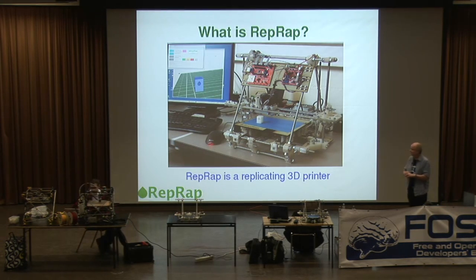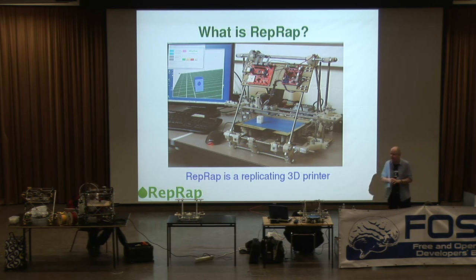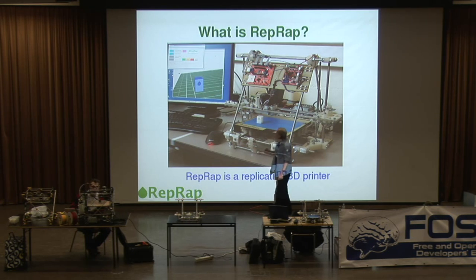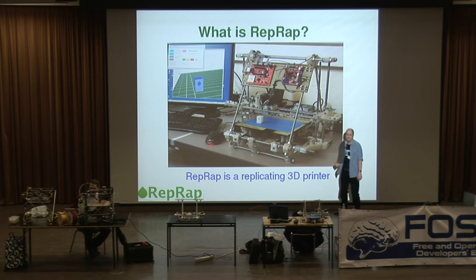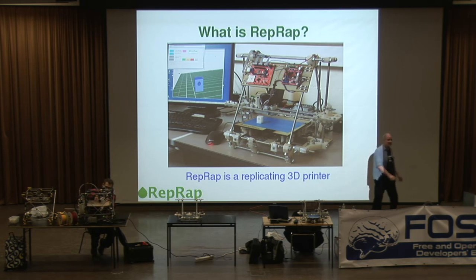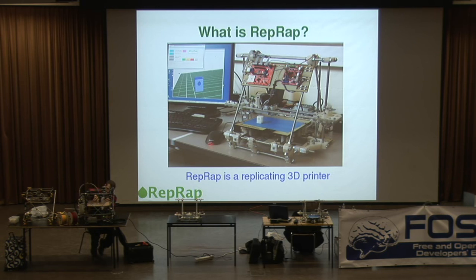That's a picture of the machine on the screen there — a very similar machine to the one you can see on the front bench here. This little part here is that part that's on the screen over there, and that part of the machine is actually this bit of the machine down here. Everything you can see on that picture that's this silvery-white color was printed in a machine like that one in order to make that one. So it copies itself in part.